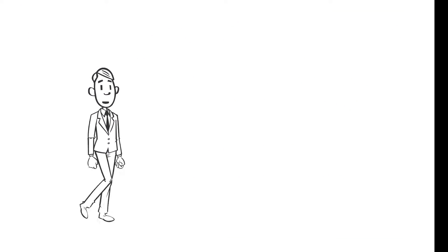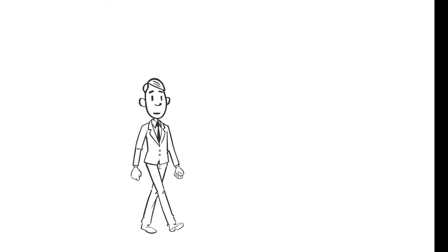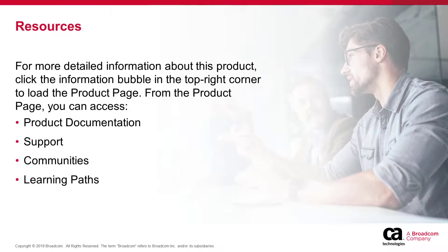That's a wrap. Thanks for watching — I hope you found it useful. For more information about Layer 7 Privileged Access Manager, click the information bubble in the top right corner to load the product page. From there, you can go to the product documentation, visit CA Support or CA Communities, and see the learning paths. You can also follow the link below.